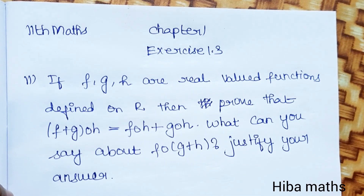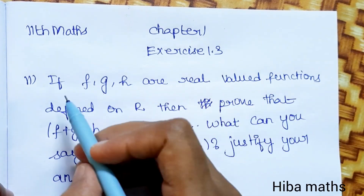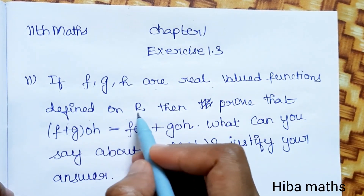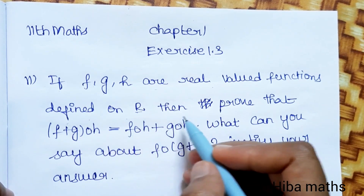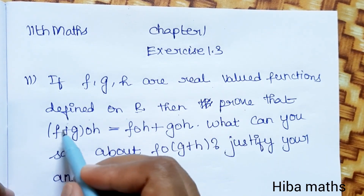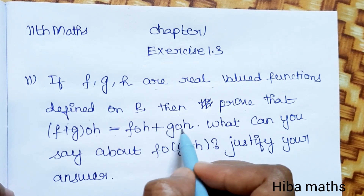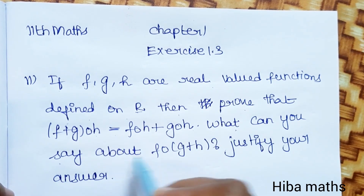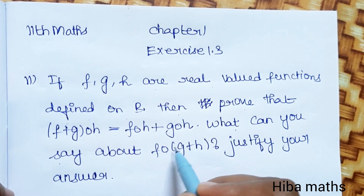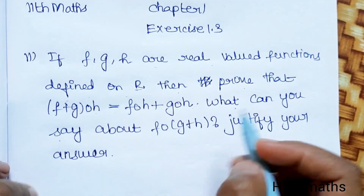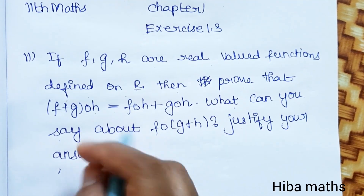Hello students, welcome to Hibamax 11th standard max, chapter 1, exercise 1.3, 11th question. Given: if f, g, h are real valued functions defined on R, then prove that (f+g) of h is equal to f of h plus g of h. What can you say about f of (g+h)? Justify your answers.